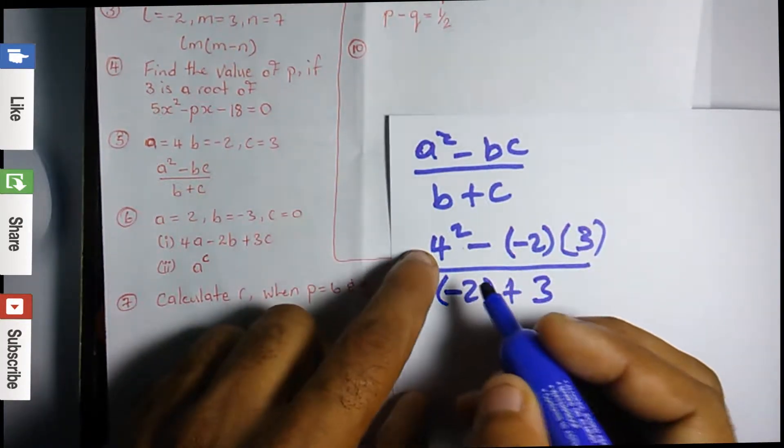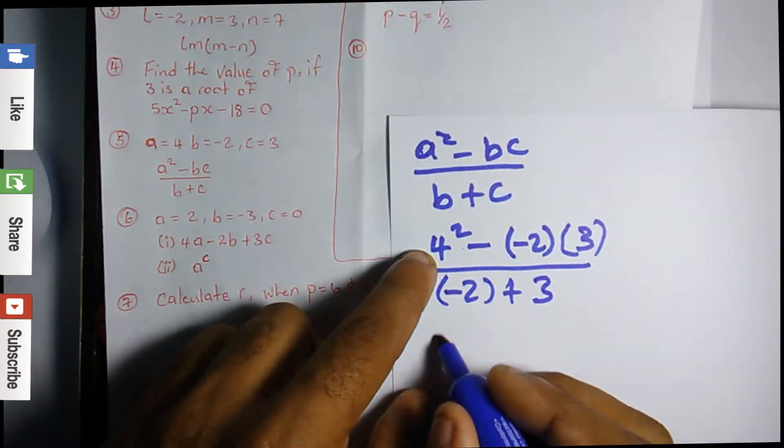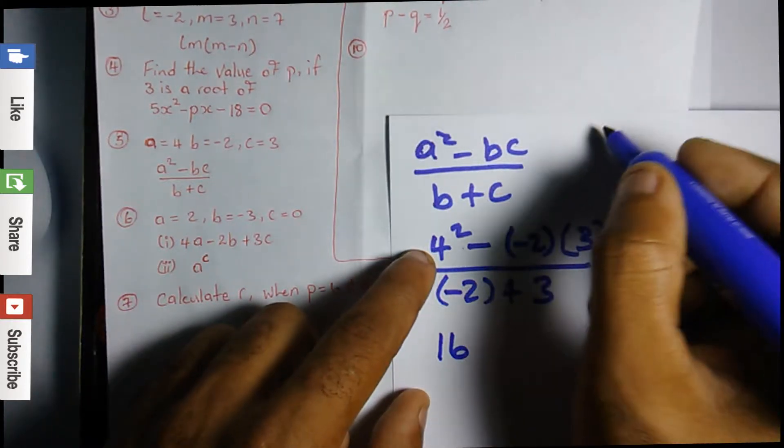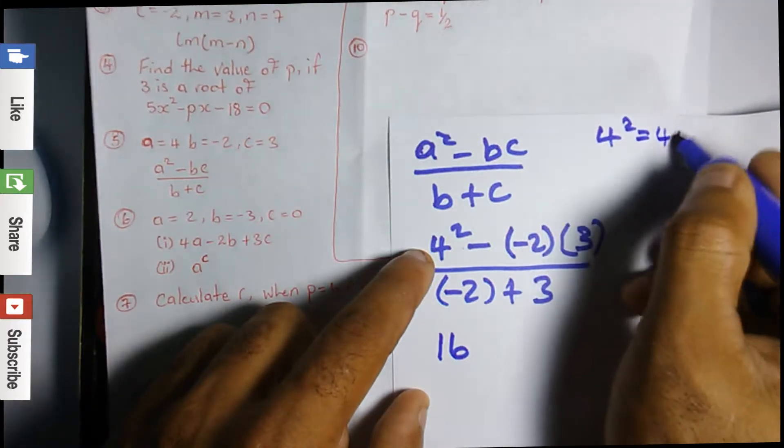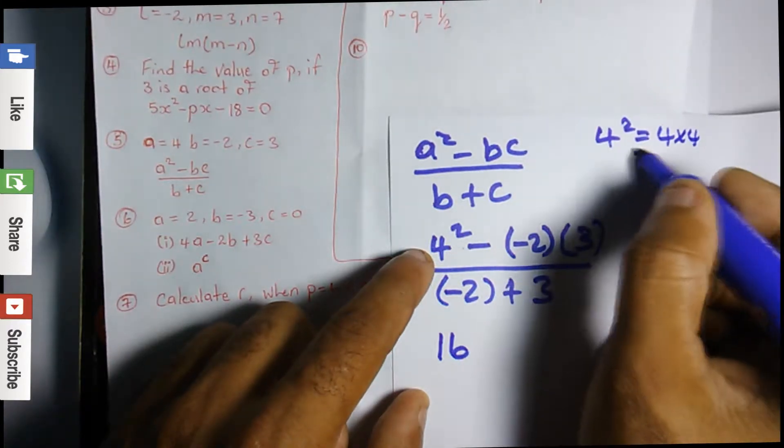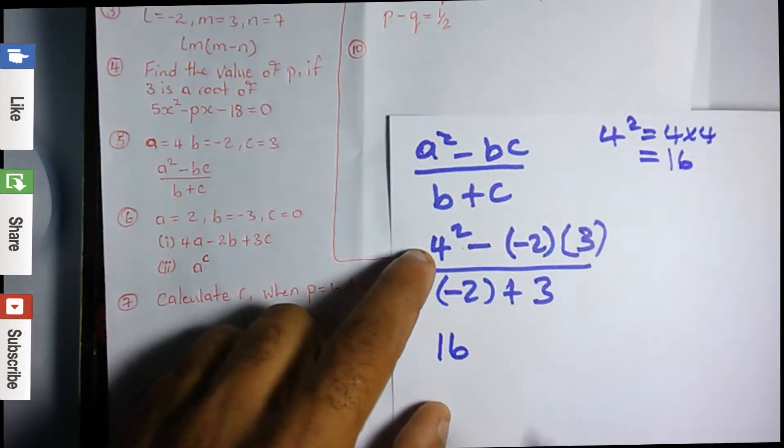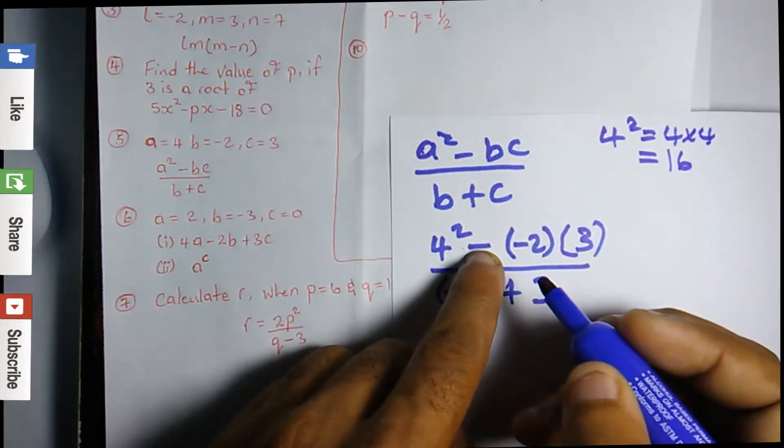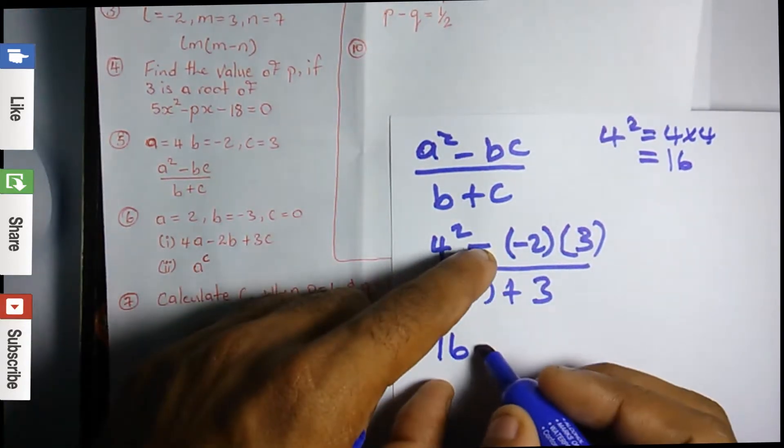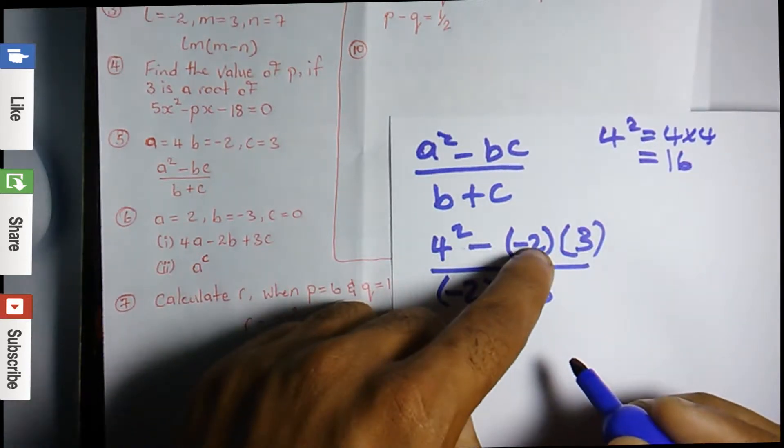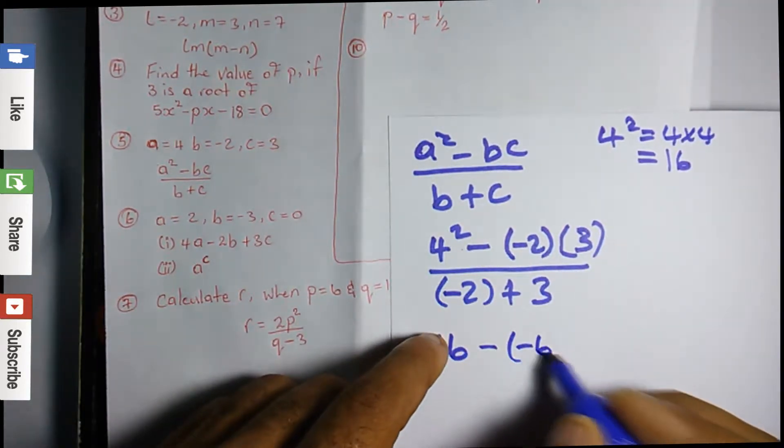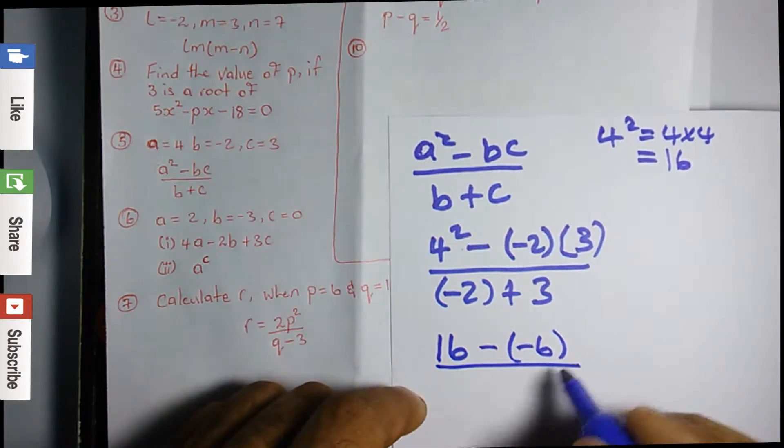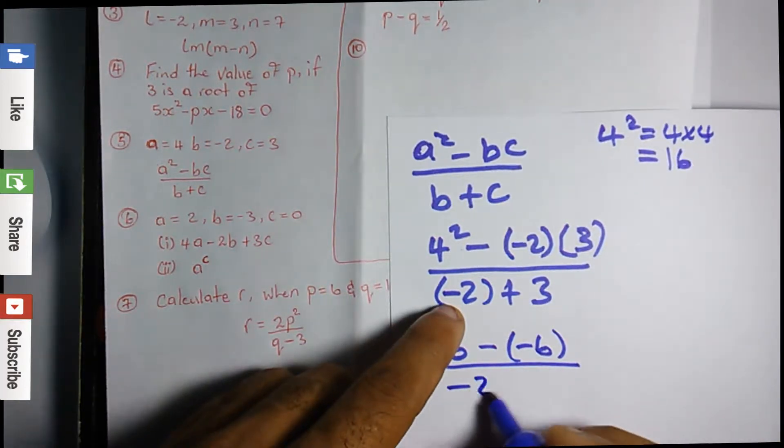So we're going to solve it. Now right here we have 4². Remember 4² is 16, 4 multiplied by 4 which equals 16. Now we have a minus sign here, so keep the minus. Negative 2 times positive 3 is negative 6, all over -2 plus 3.